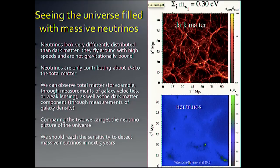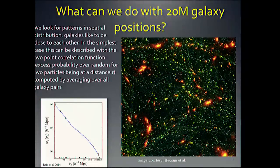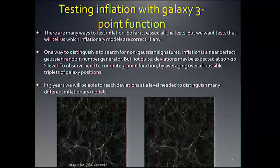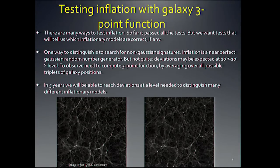However, in the next five years we think we'll get the sensitivity to observe this. The way to think about it: galaxy positions in the sky pretty much trace the dark matter part, but along the radial direction where we also have velocities, we're tracing the sum of dark matter and neutrinos. Even though neutrinos are only 1% of the total, we're going to have such huge sensitivities that we will be able to determine the neutrino mass.